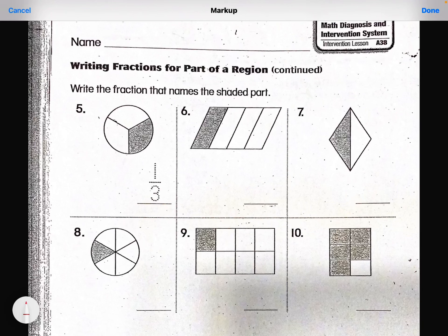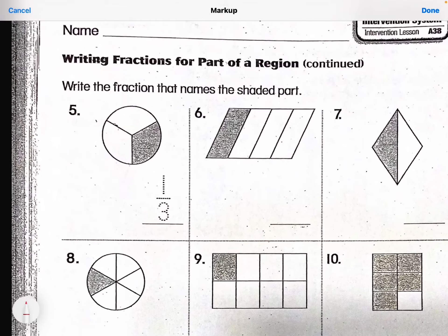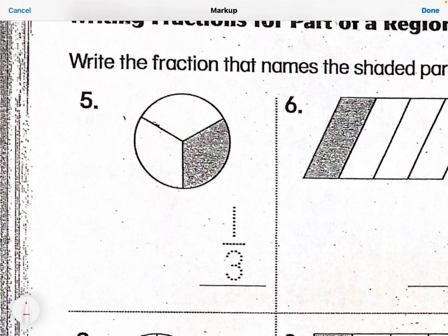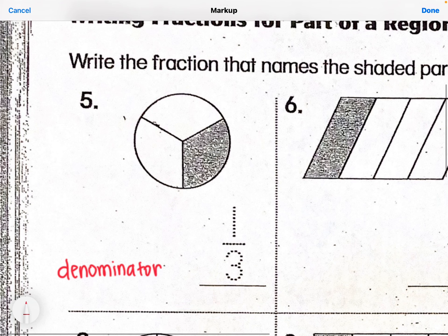The first thing says: write the fraction that names the shaded part. So what does that bottom number tell us? That bottom number is called the denominator. The denominator is the bottom number — it is down below the line. How I remember that: down starts with D, just like denominator.